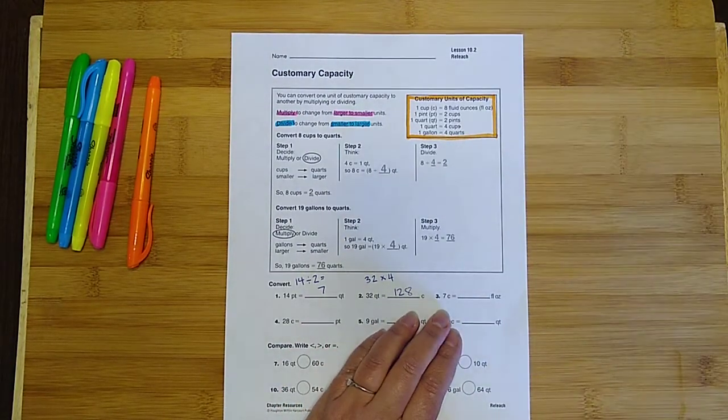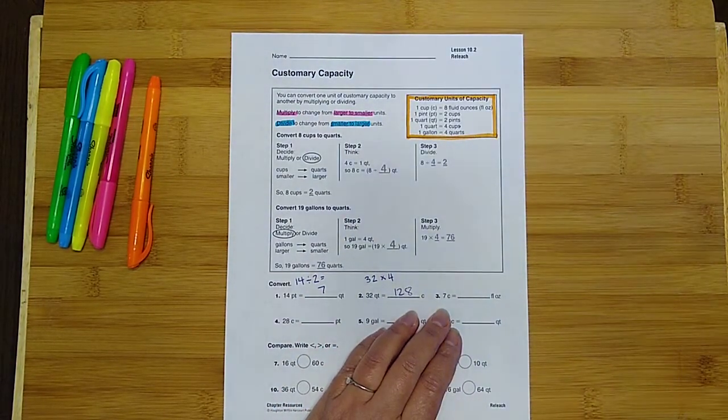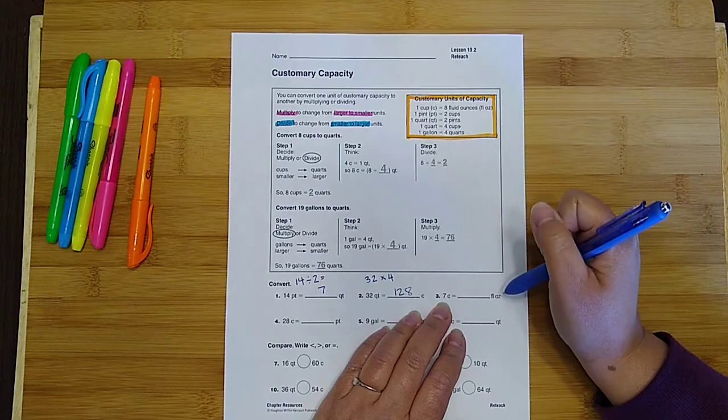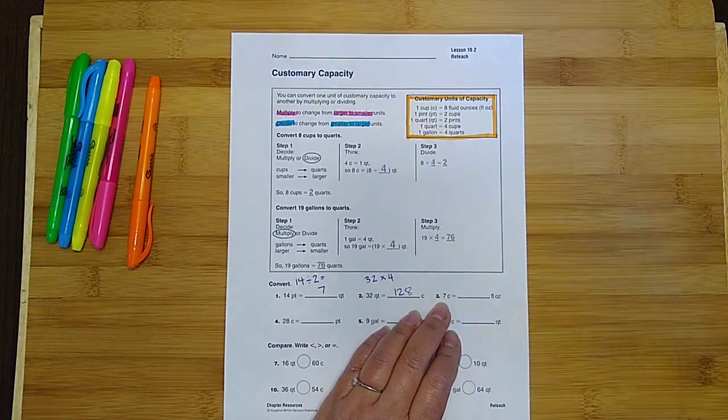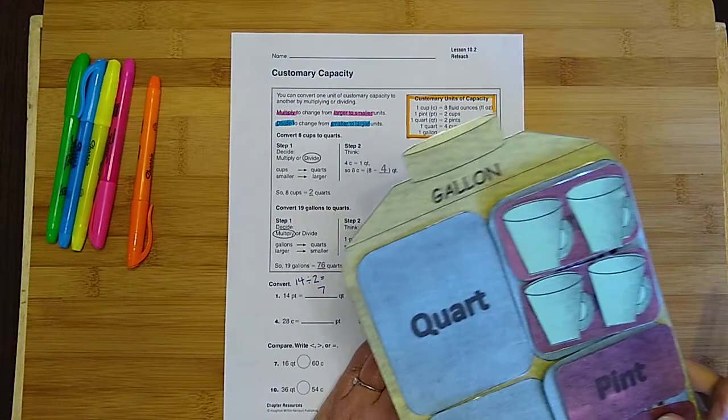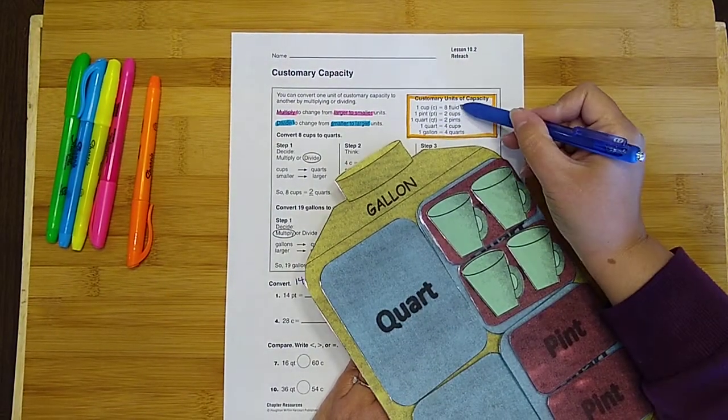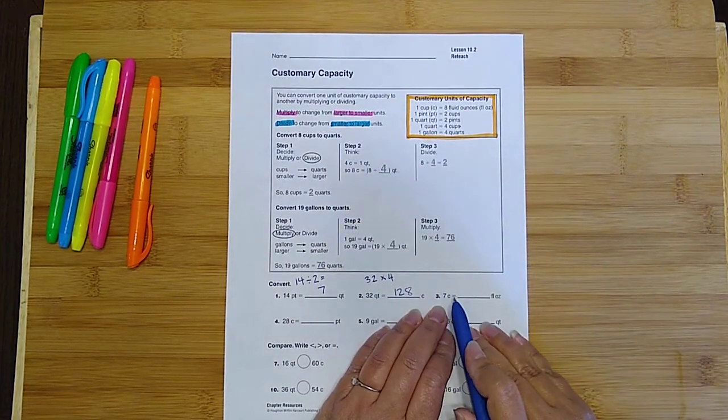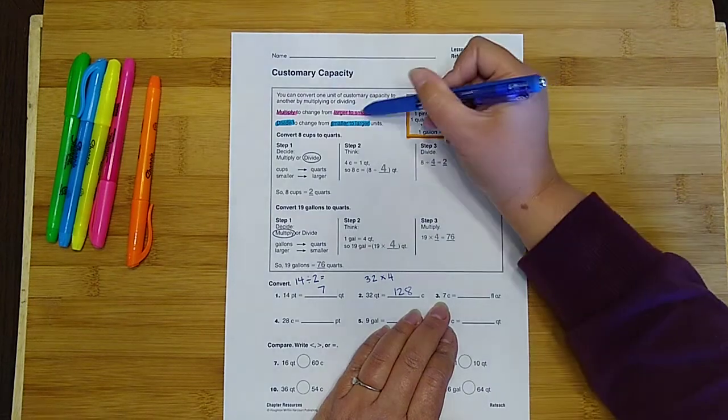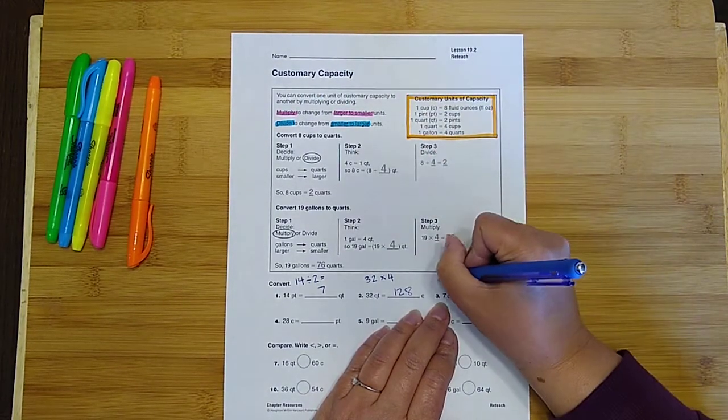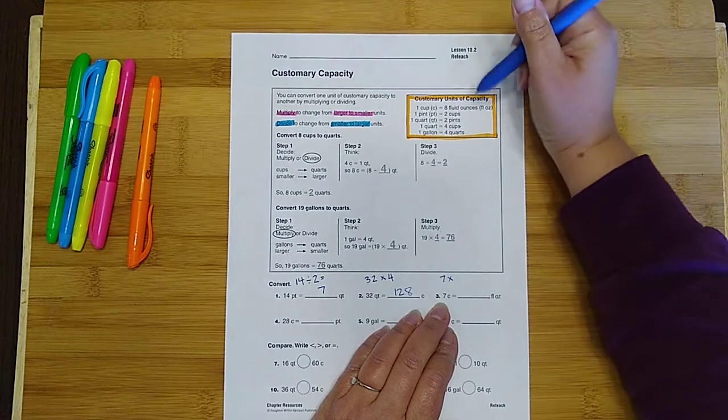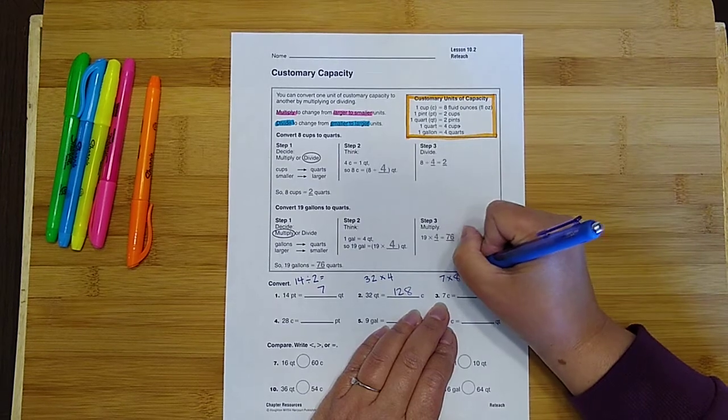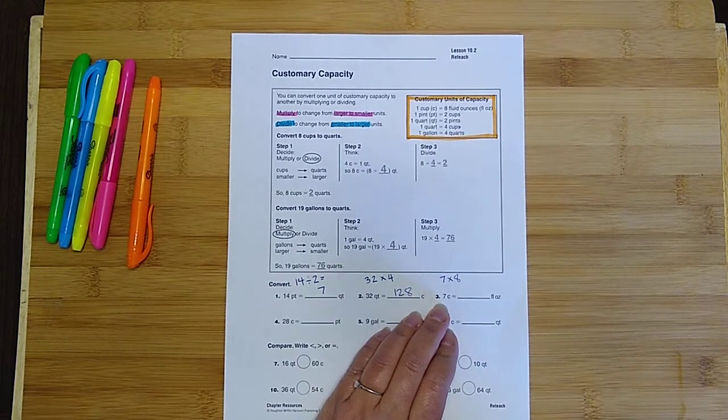Okay, over here we have 7 cups equals blank fluid ounces. So cups, I don't have fluid ounces on here, but fluid ounces are smaller than a cup because there's 8 fluid ounces inside of one cup. Okay, so I'm going from larger to smaller, which means I want to multiply. So 7 times, and my conversion, one cup is equal to 8 fluid ounces, so the number 8 is what I want to multiply by.